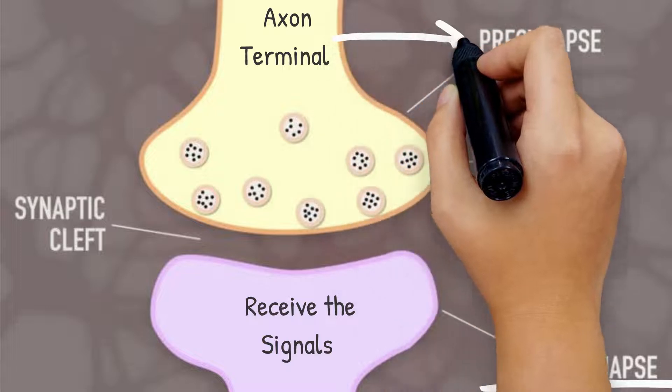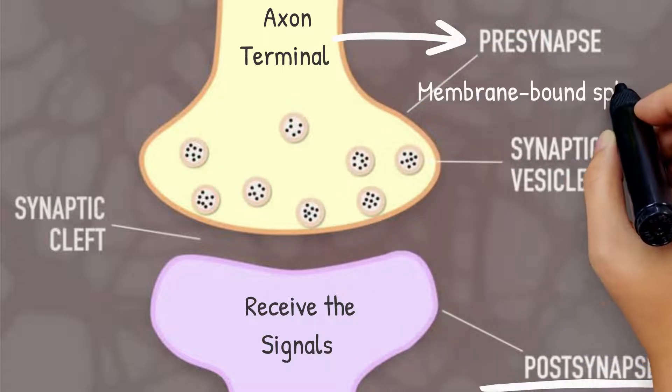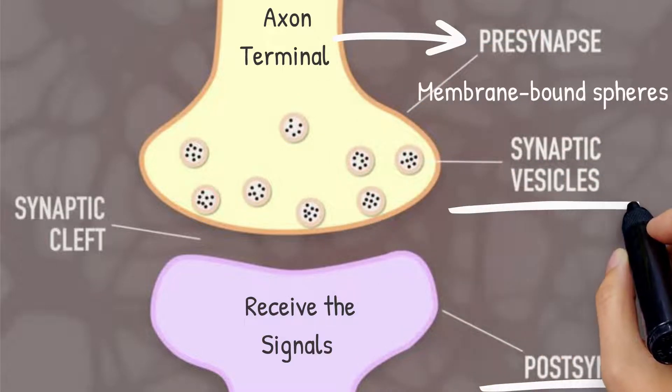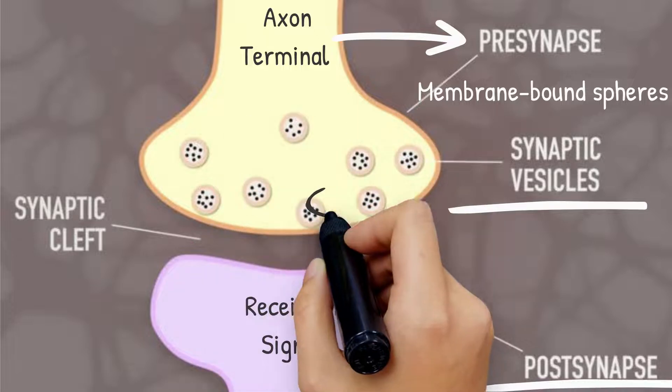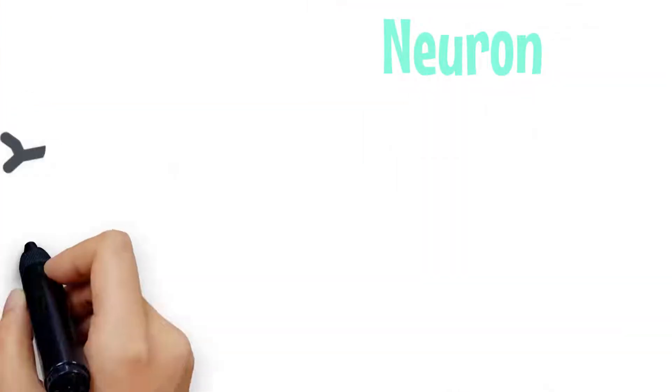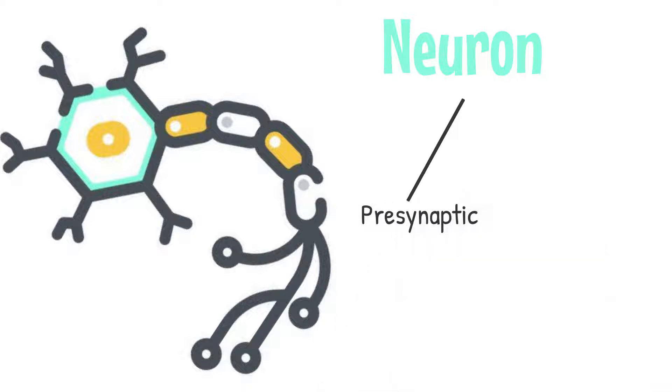The axon terminal of pre-synaptic neurons contains membrane-bound spheres called synaptic vesicles that are filled with neurotransmitter molecules. A neuron can be both pre-synaptic as well as post-synaptic.